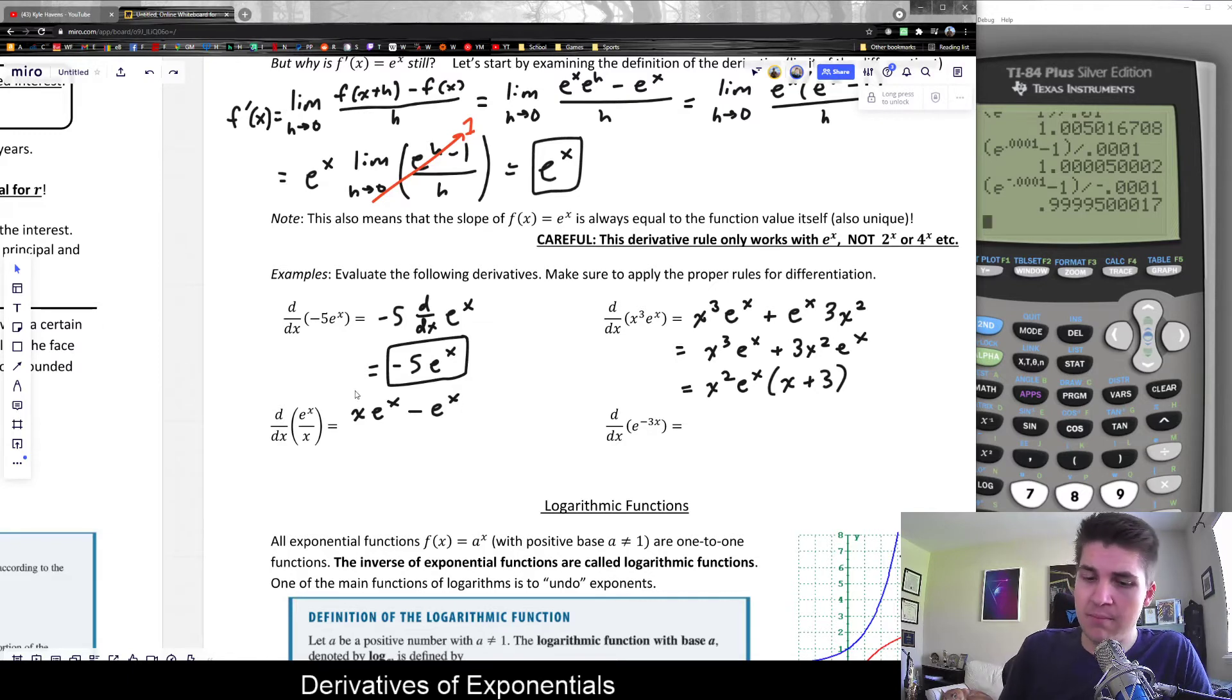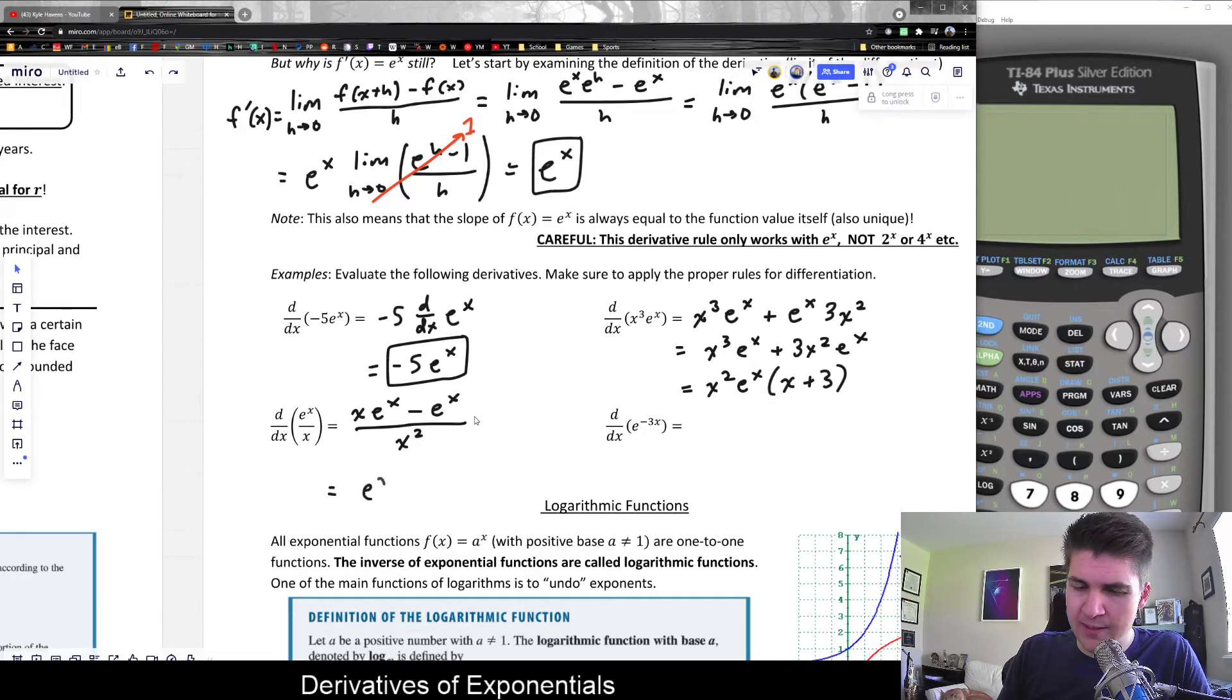So I'll just skip that. But we would have e to the x times 1, which would just be e to the x, of course. Square the bottom away we go. So all of that would be divided by x squared. And again, similarly, we could factor out e to the x from this if we wanted to. And that would leave us with x minus 1 over x squared.